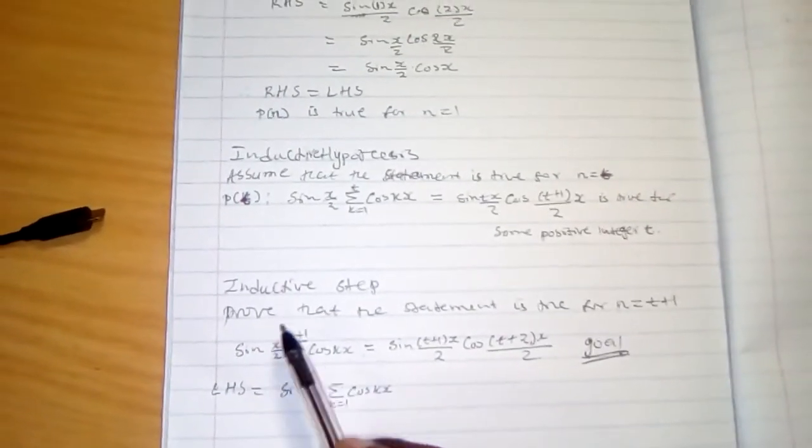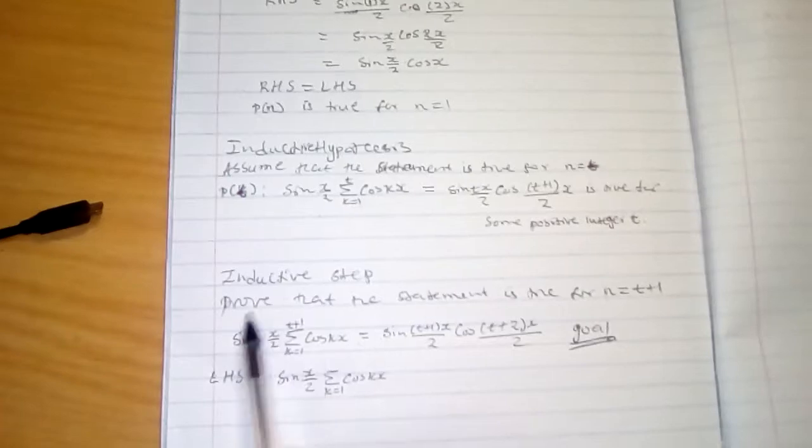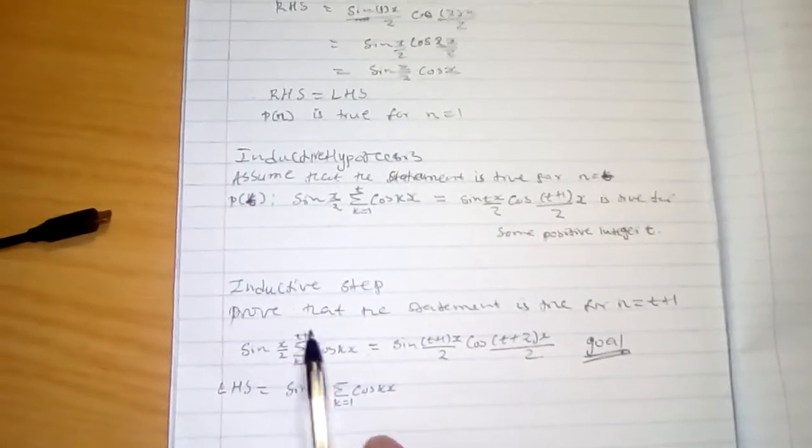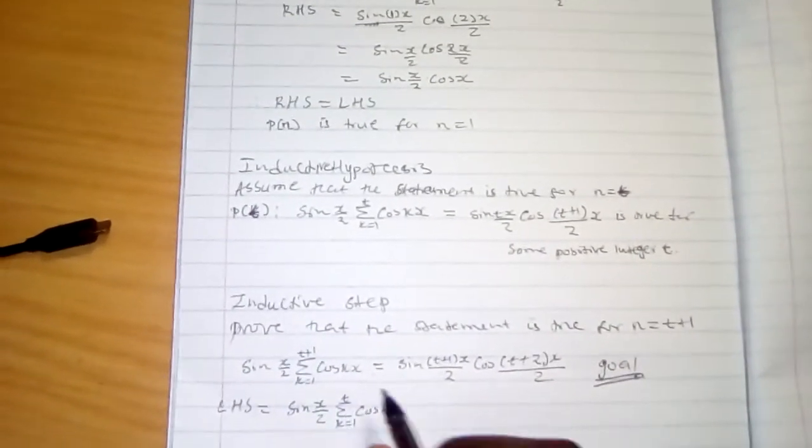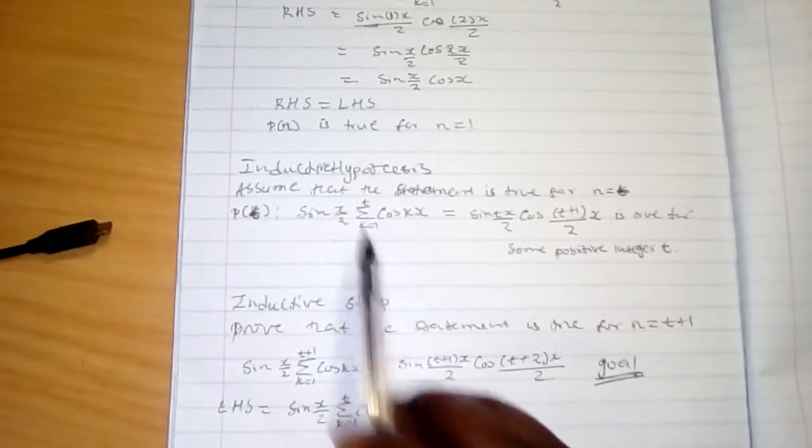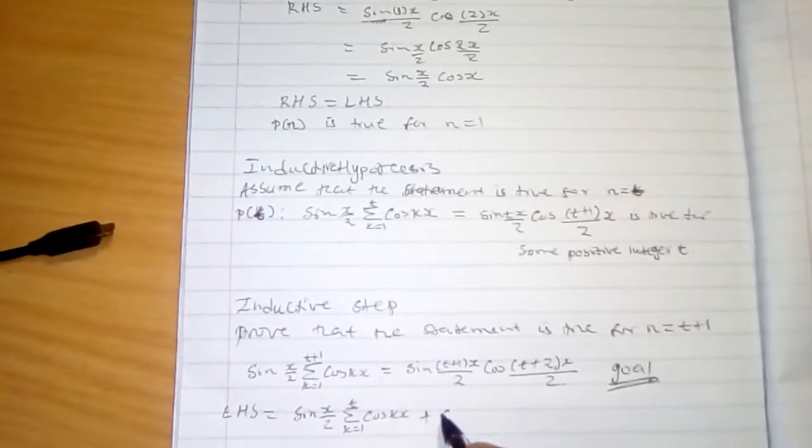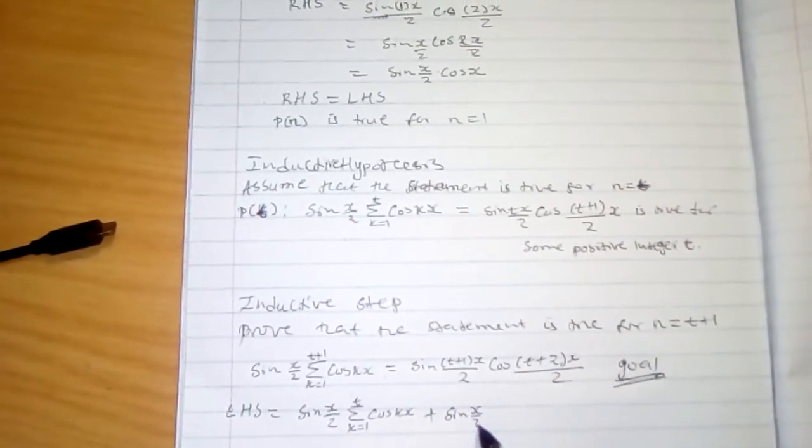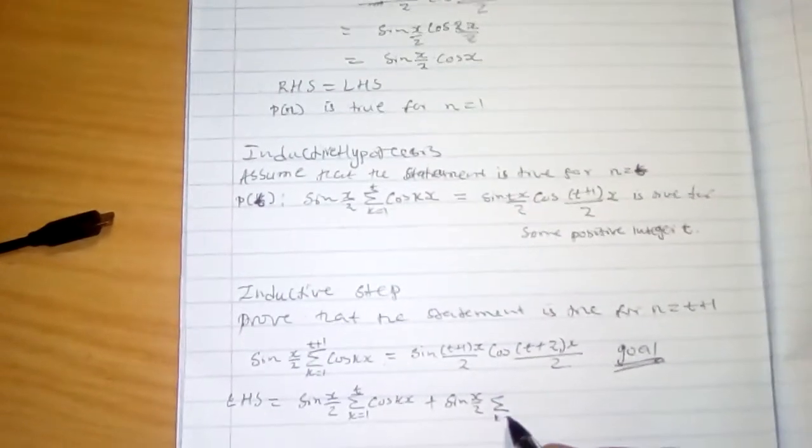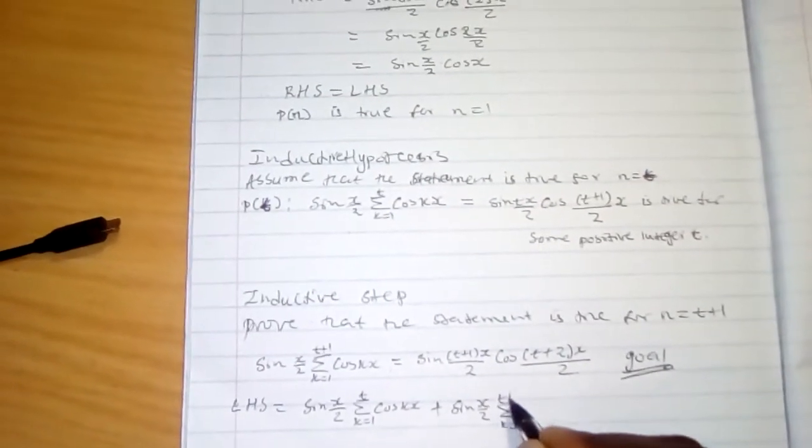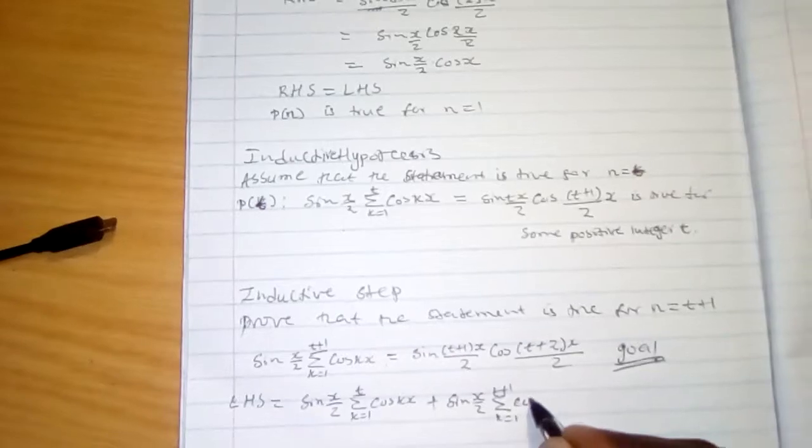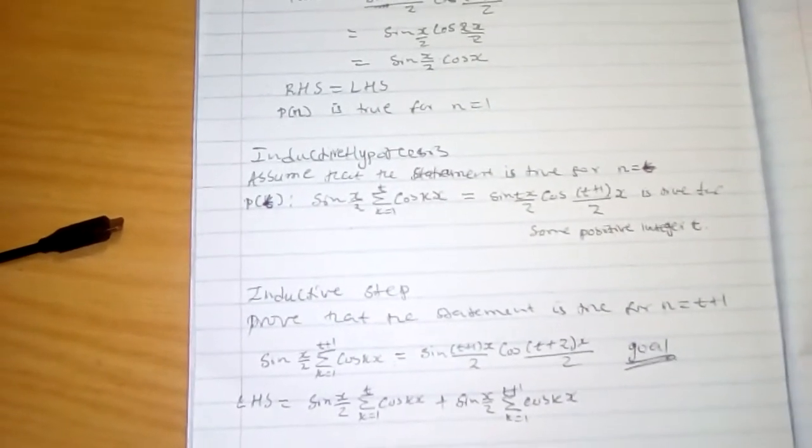Remember that this second term is t plus 1. But we know that firstly we have t, then we are going to add this with t sigma k is equal to 1, t plus 1 cos kx.